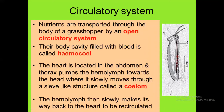The heart is situated on the dorsal side of the body and is attached by a kind of muscle called alary muscle. Their blood is called hemolymph and there is no respiratory pigment like hemoglobin, so it cannot take part in respiration. Their blood is colorless and their blood cells are called hemocytes. This blood is mixed with lymph in the body cavity, so it is called hemolymph.